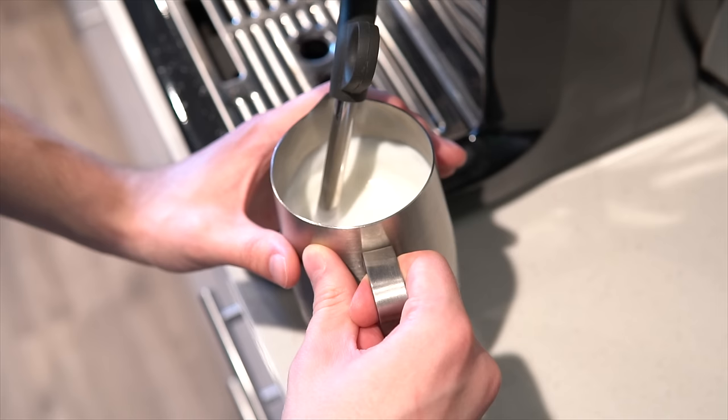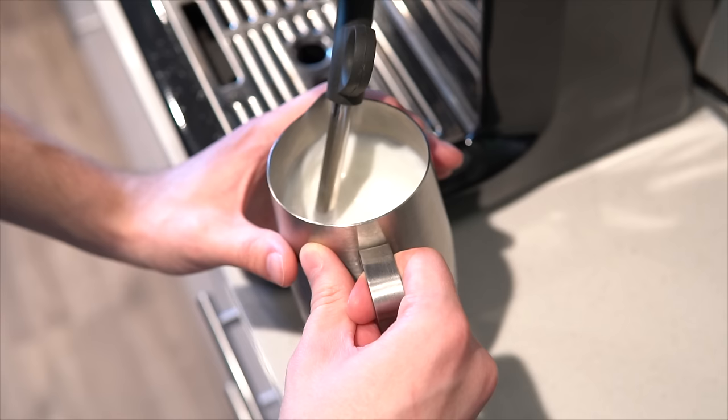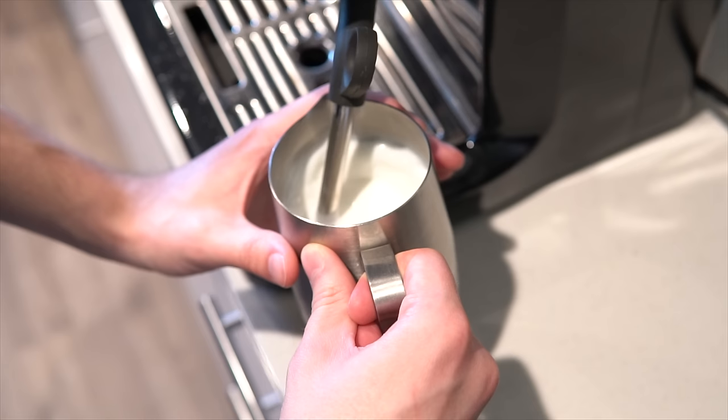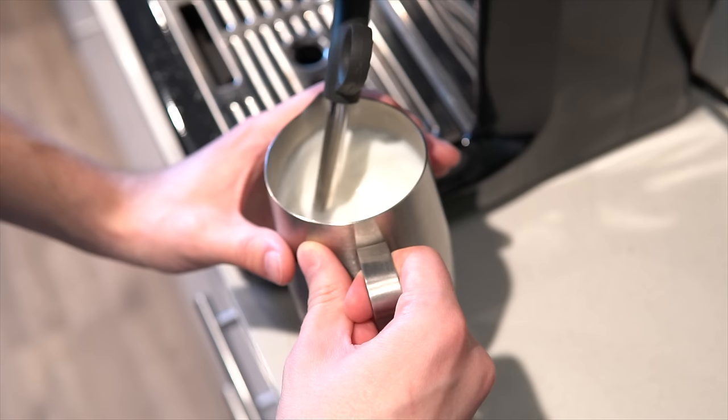The vortex mixes in the air and creates that thick glossy milk texture that you've been searching for. Play with the positioning until you create a large rolling vortex, and then hold that position until the pitcher is too hot to touch for more than a second.